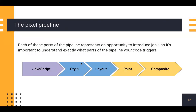I also want to mention the pixel pipeline. There are five main things you need to know and be mindful of — these are key points in the pixel-to-screen pipeline: JavaScript, which handles work that will result in visual changes; style calculations, the process of figuring out which CSS rules apply to which element based on matching selectors; layout; paint; and compositing.